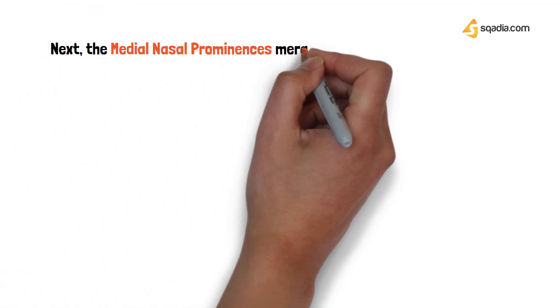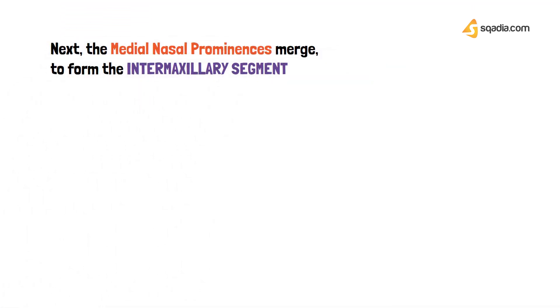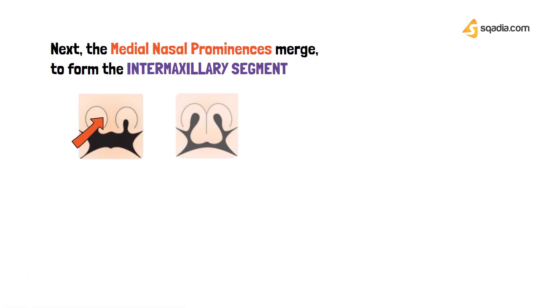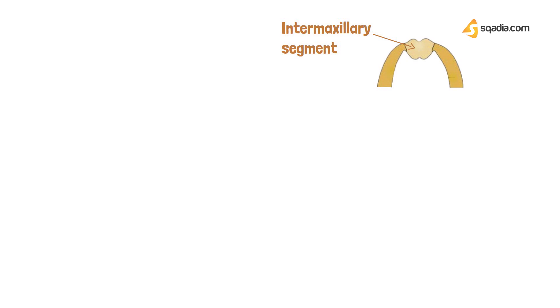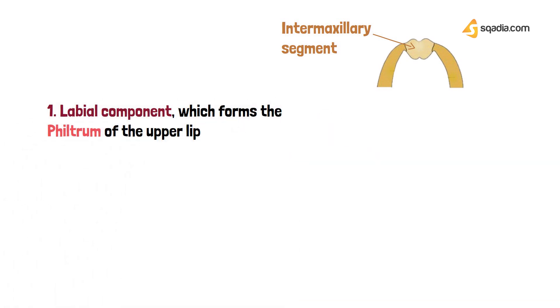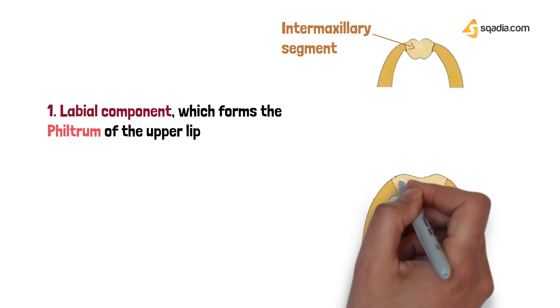Next, the medial nasal prominences merge together to form the intermaxillary segment. Over the weeks they come together and merge. This intermaxillary segment is responsible for the formation of the labial component, which forms the philtrum — the middle part of the upper lip.